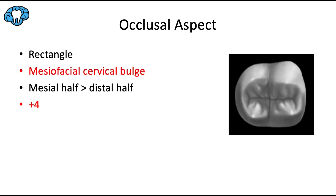For the occlusal aspect, the general shape can be described as a rectangle as opposed to a pentagon, because we have four cusp tips forming a sort of box. There's one part I want to point out: the mesiofacial cervical bulge is much more noticeable now than in the first molar. Although this is the most symmetrical molar in the mouth, this mesiofacial cervical bulge is your key for recognizing whether this is a right or left mandibular second molar. In this case, since the mesial surface is on the right side, we know this tooth is number 18, not number 31. Number 31 would look like a mirror image with the mesiofacial cervical bulge on the left side.